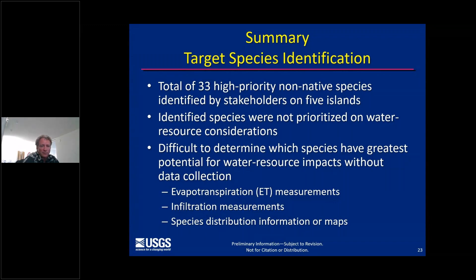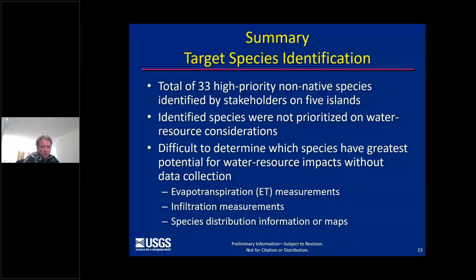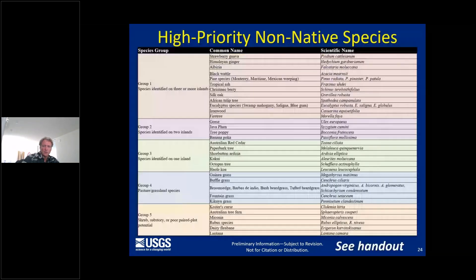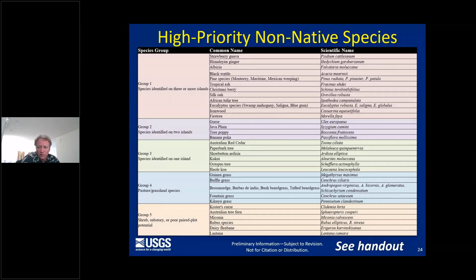As a result of this collaborative process and workshops on different islands, we were able to identify a total of 33 high-priority non-native forest species on five different islands. However, some species were not necessarily prioritized just based on water resource considerations. We realize it's difficult to determine which species have the greatest potential for water resource impacts without data collection, specifically ET measurements, infiltration measurements, and species distribution information. The list was developed using criteria such as current aerial extent, invasion potential, growth rate, existing research, and stakeholder interest. We also included grassland and pasture as a land cover class of interest during the site reconnaissance.